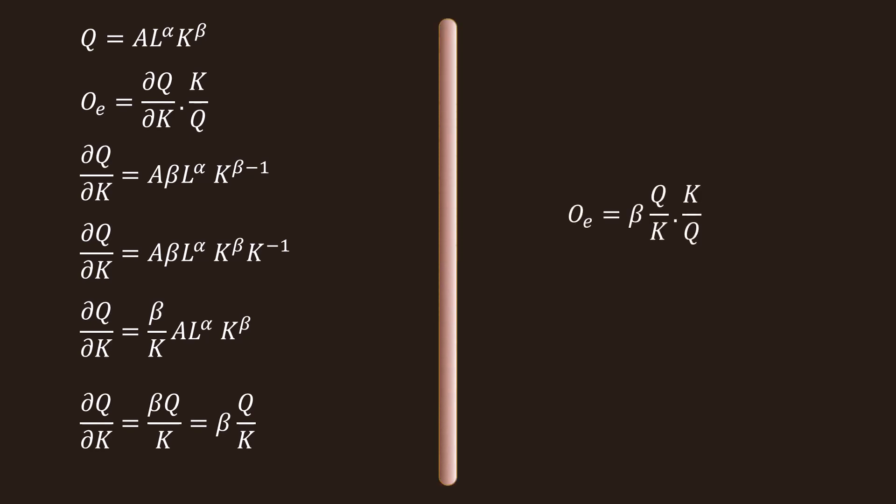Substitute the value of dQ/dK in the elasticity formula. QE equal to (beta Q / K) multiplied by (K / Q). Q and Q cancel, and K and K cancel. The value of elasticity is beta — which is the exponent of the variable capital K.